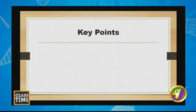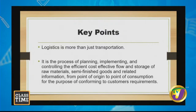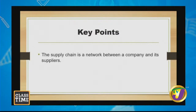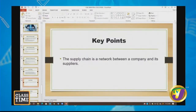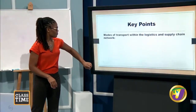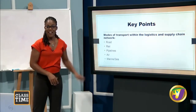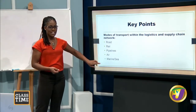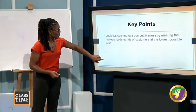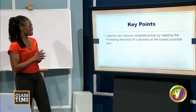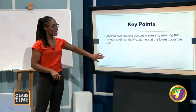Key points for today: remember that logistics is more than just transportation. The supply chain is a network between a company and its suppliers. The key components are procurement, inventory management, transportation, and warehousing. The different modes of transport are road, rail, pipelines, air, and maritime or sea transport. Logistics can improve competitiveness by meeting the increased demands of customers at the lowest possible cost, and it can also achieve comparative cost advantage primarily through outsourcing.